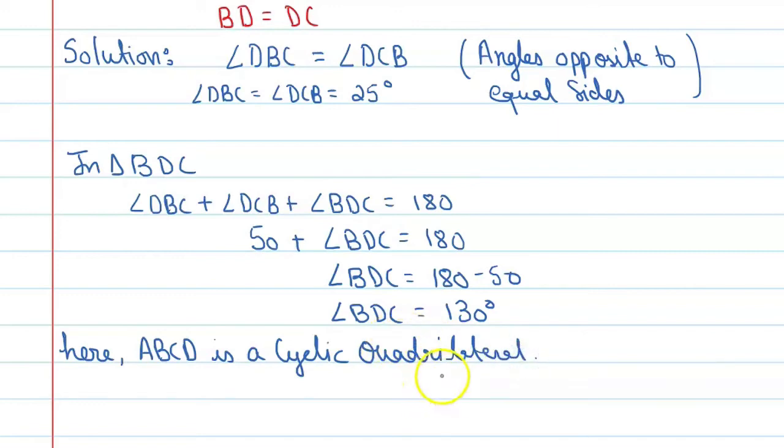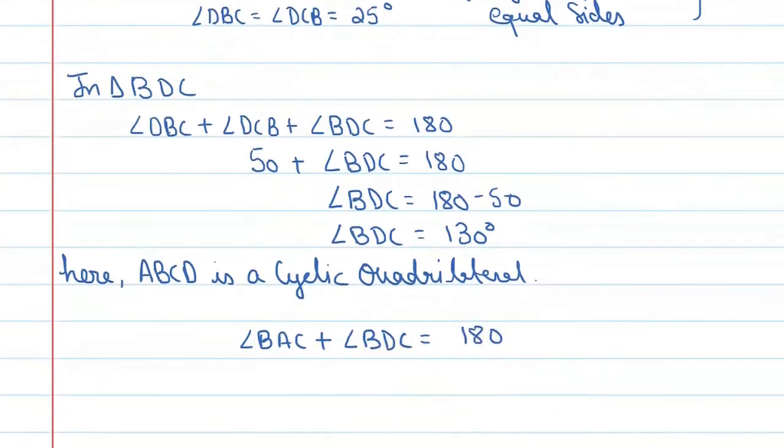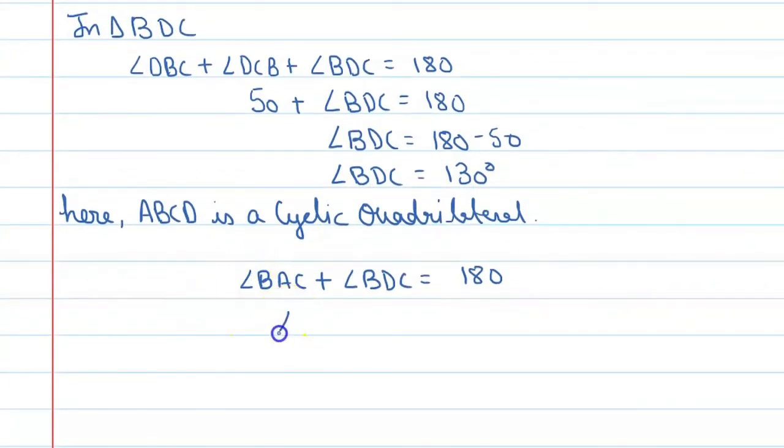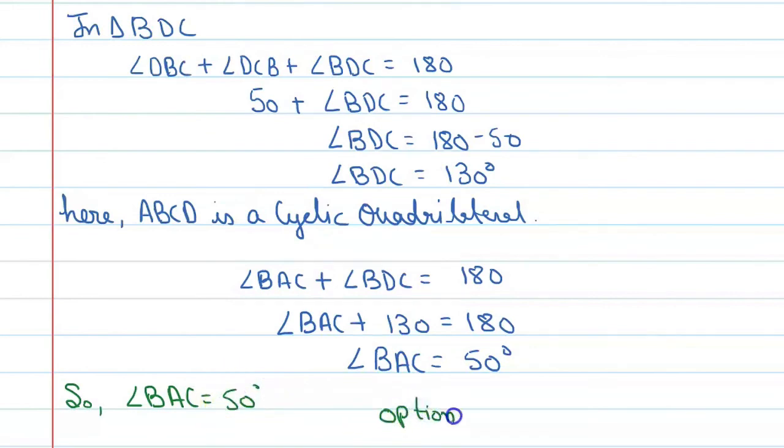And in cyclic quadrilateral, the opposite angles sum is 180 degrees. So you can say angle BAC plus angle BDC is equal to 180 degrees. And what is the value of BDC? BDC value is 130 degrees. Thus we can say angle BAC is equal to 180 minus 130, so angle BAC equals 50 degrees. So correct option is C.